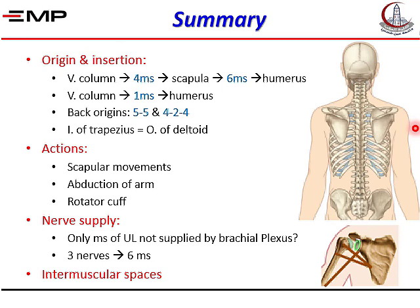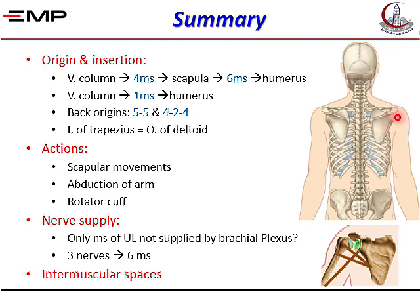Regarding nerve supply: the only back muscle not supplied by the brachial plexus is the trapezius (cranial nerve XI). The rhomboids and levator scapulae are supplied by the dorsal scapular nerve. Latissimus dorsi is supplied by the thoracodorsal nerve. In the shoulder, three nerves supply six muscles — two muscles each: suprascapular nerve for supraspinatus and infraspinatus; axillary nerve for deltoid and teres minor; upper subscapular for subscapularis, and lower subscapular for subscapularis and teres major. Remember the three intermuscular spaces: bounded by the humerus, long head of triceps, and the two teres — minor above and major below.